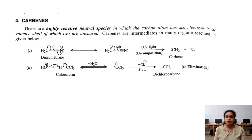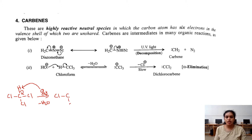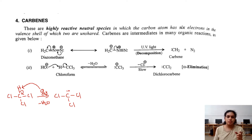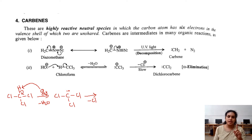Now let us see how dichlorocarbene is formed. From chloroform, OH- abstracts a proton. Water is eliminated, and the resultant species is a carbon with 3 chlorine atoms carrying a negative charge — representing 2 electrons, one from carbon and the other from hydrogen. From this system, one chlorine atom is eliminated as Cl-.